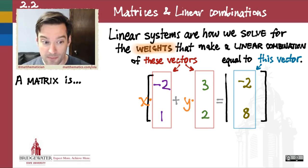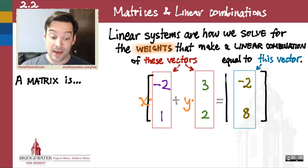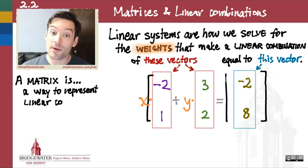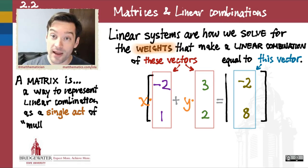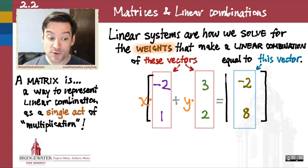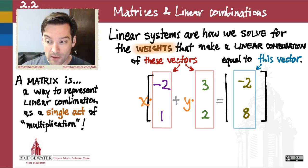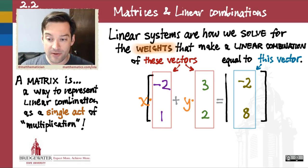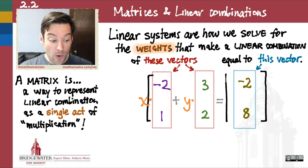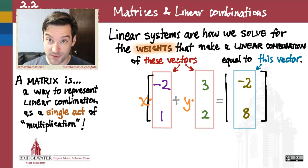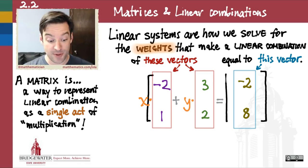So, what is a matrix? Really, beyond a bookkeeping tool, what is a matrix going to do for us? The key is to see a matrix as a way of representing linear combination, which is the operation that drives linear algebra. A matrix is a way to represent a linear combination as a single arithmetic act. Linear combinations currently require two separate operations — scalar multiplication and addition — and a matrix is a way to make them work together as a single act of multiplication.